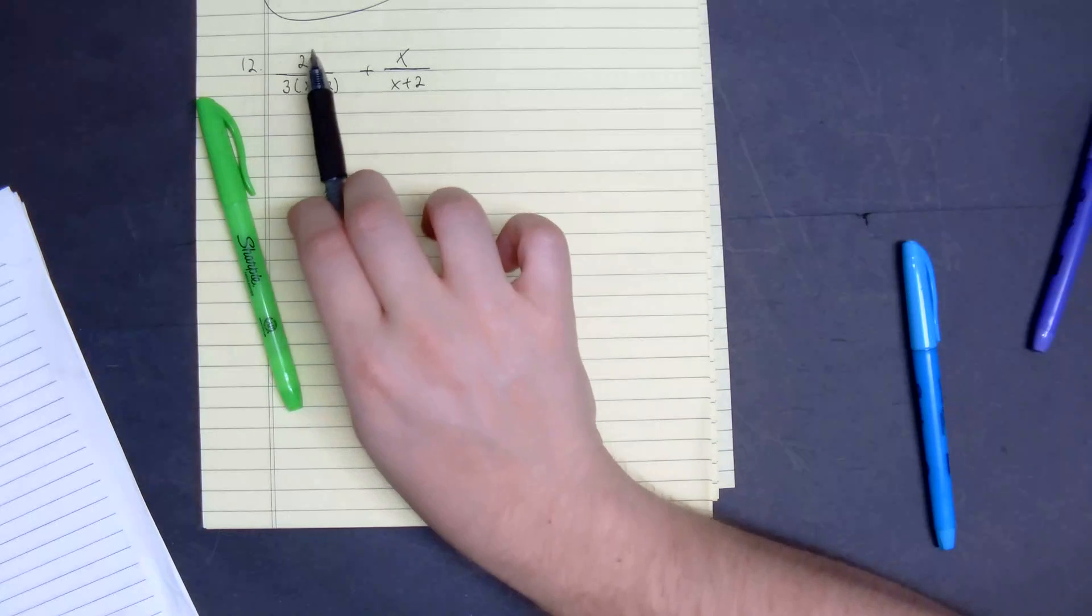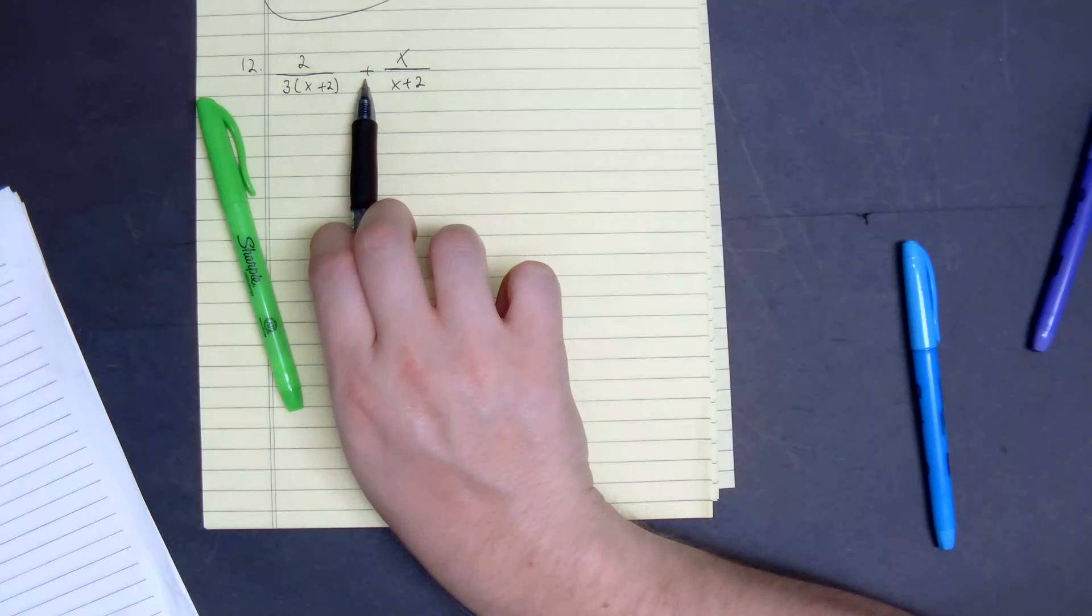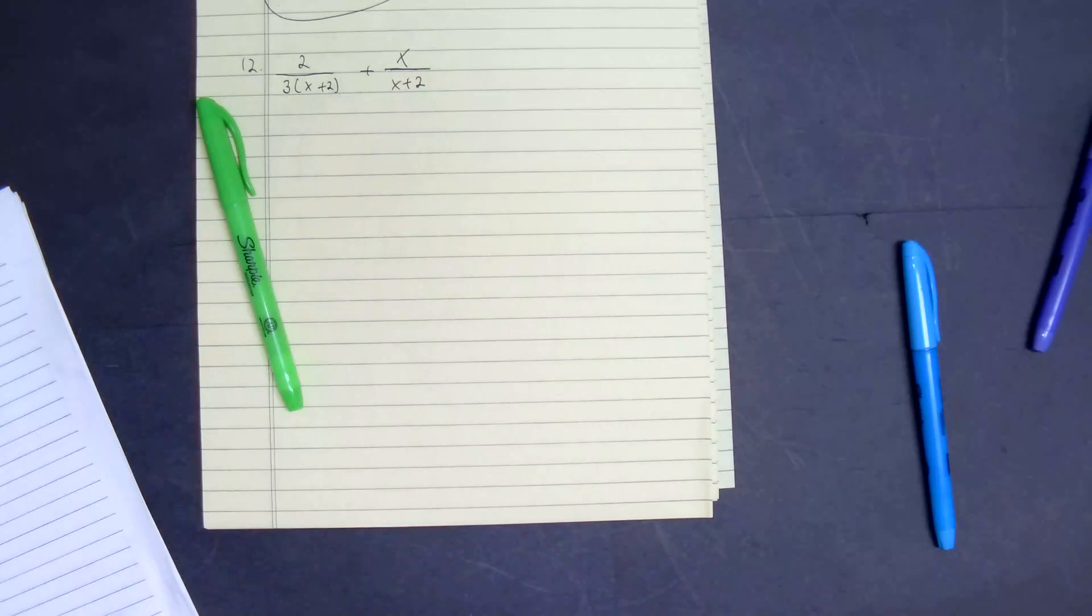Well again, number 12, we have 2 divided by 3 times the quantity of x plus 2, and it's being added to x divided by x plus 2.